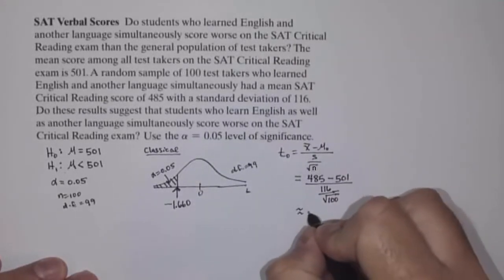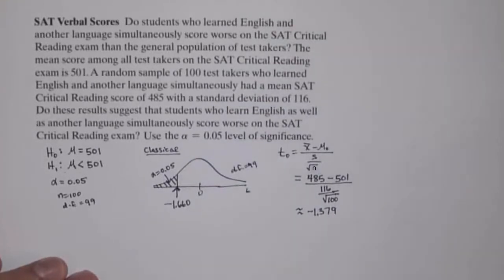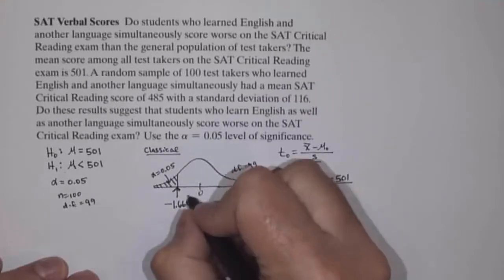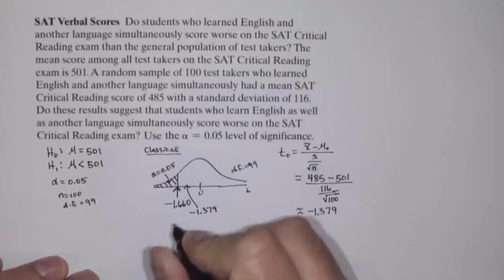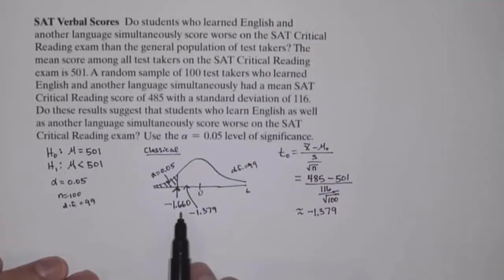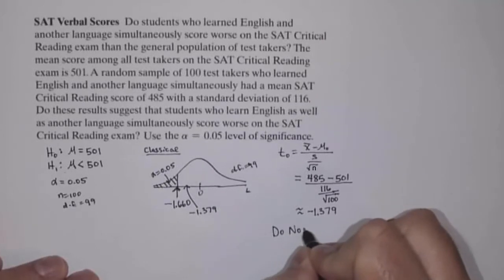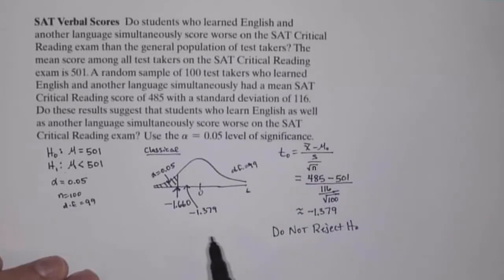The test statistic is negative 1.379. Using the classical approach, we compare that to our critical value of negative 1.660. Since negative 1.379 is to the right of negative 1.660, it does not fall in the rejection region, so we do not reject the null hypothesis.